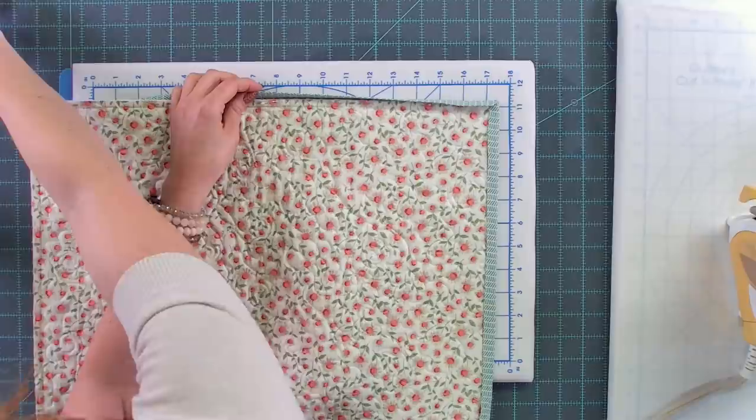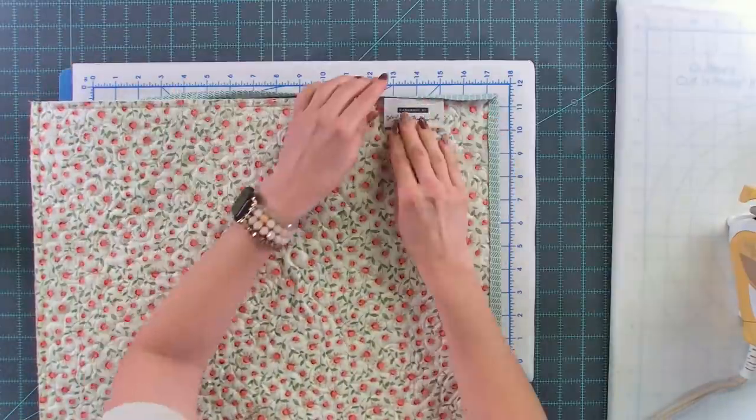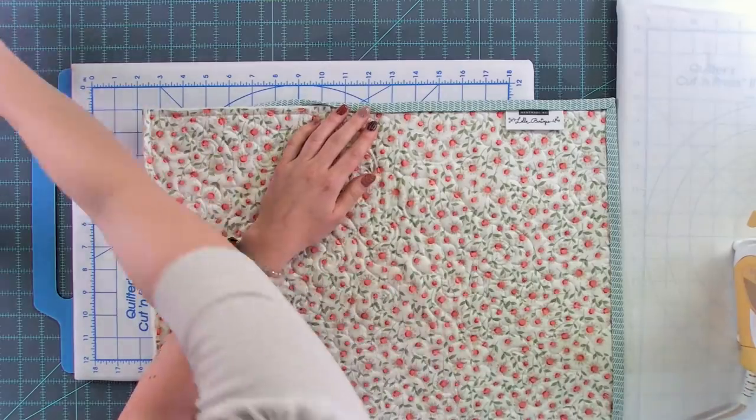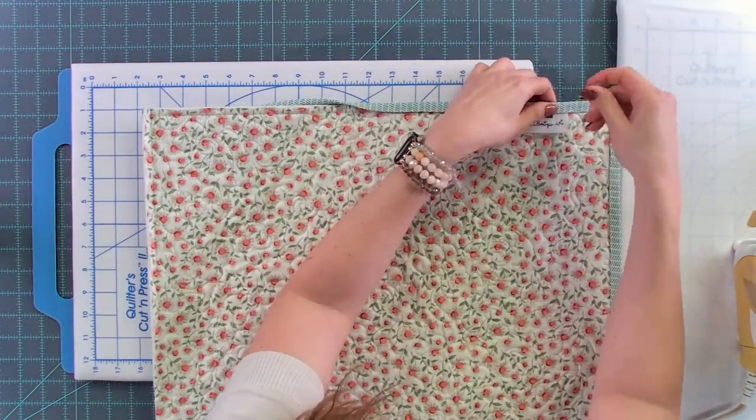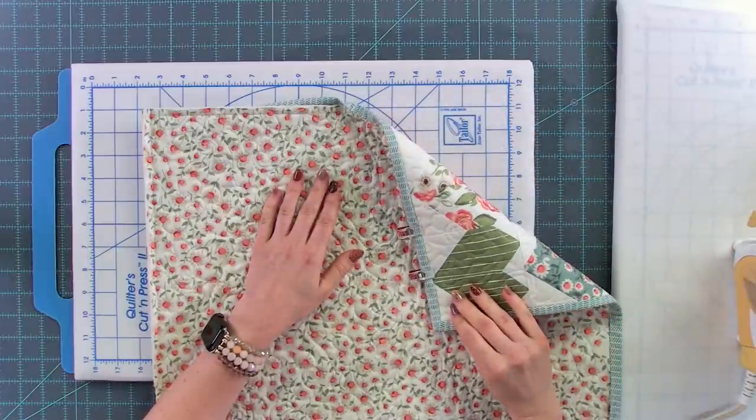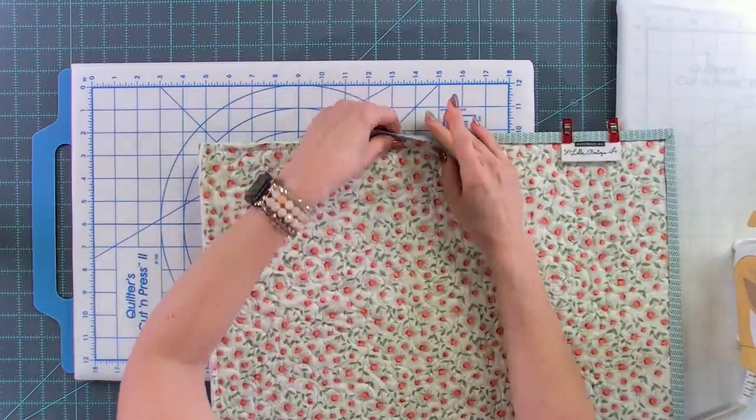Oh and before I forget if you have quilt labels that you like to insert into the binding this is when you're gonna do it. I got these cute little custom labels made. What I actually do too is I'll use binding clips to just kind of hold that in place. Because in a minute we're gonna be top stitching and that way I know exactly where the label is and I can kind of take a little more care at that part.